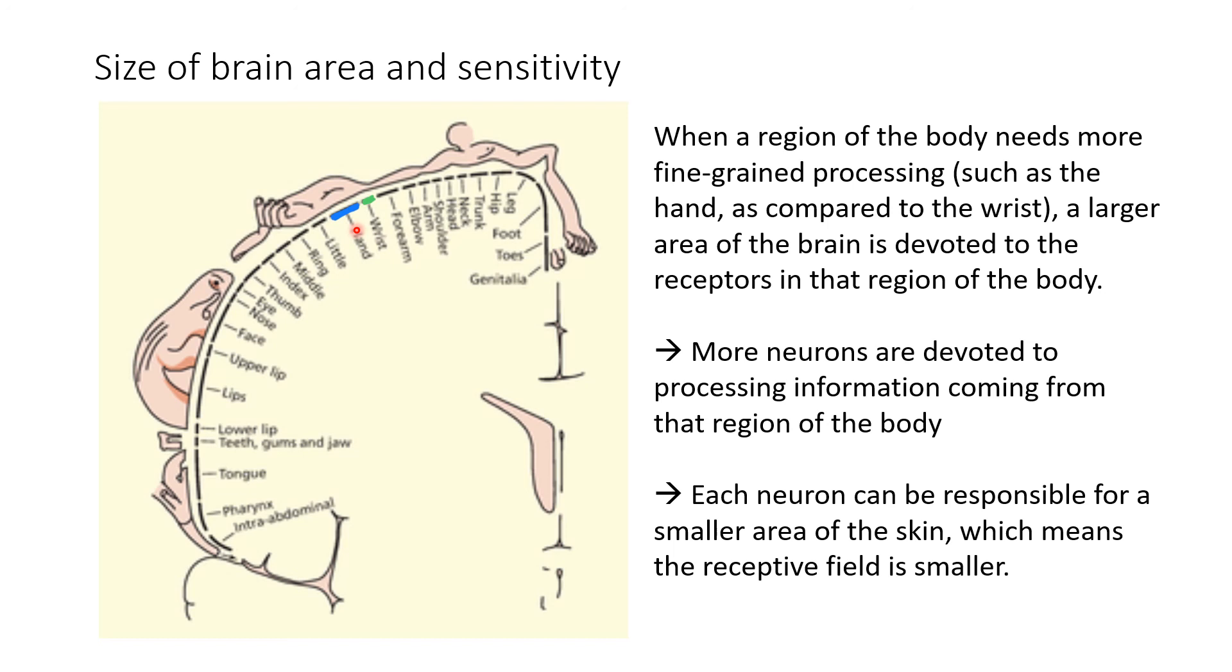So in general, the larger that cortical area in the somatosensory map, the more sensitive is the corresponding body region.